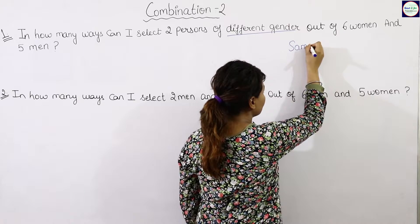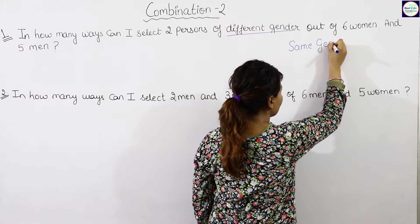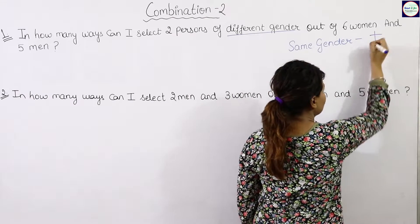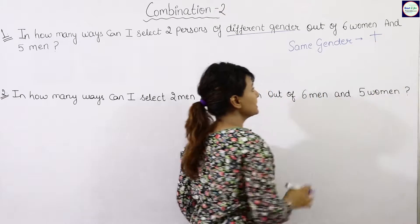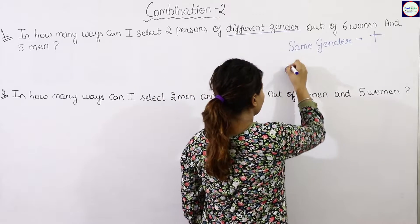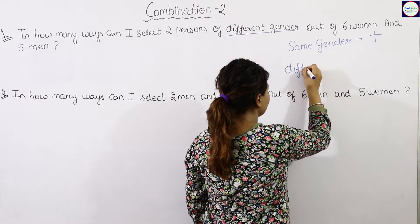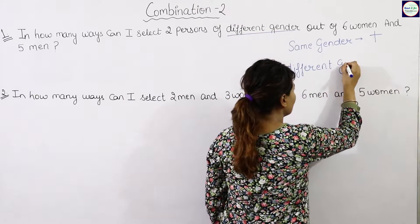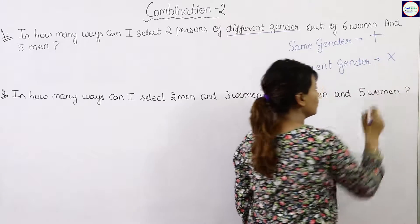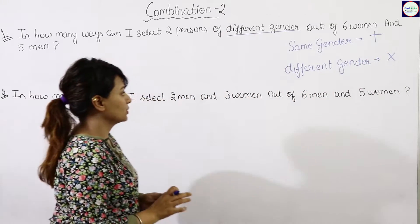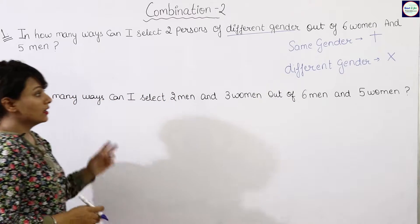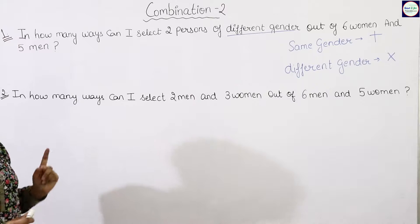When it is the same gender, it is an either/or case, so we always add. When we ask for different gender, we multiply, because both conditions must be satisfied together.